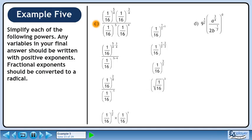We can write this in radical form as the square root of 1 over 16 cubed. The square root of 1 over 16 is 1 over 4. Cube 1 over 4 to get the answer of 1 over 64.